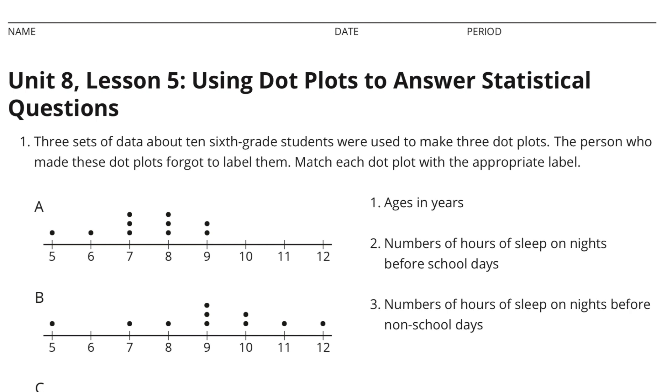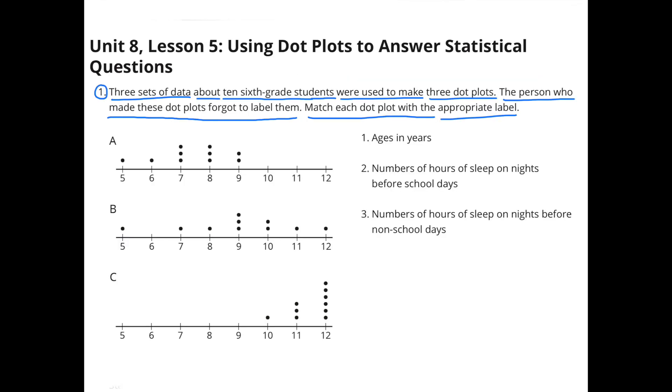Unit 8 Lesson 5 Using Dot Plots to Answer Statistical Questions. Number 1: Three sets of data about 10 6th grade students were used to make three dot plots. The person who made these dot plots forgot to label them. Match each dot plot with the appropriate label.